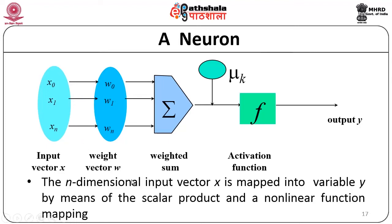The input to the neuron is going to be an n-dimensional vector. Any dataset you want to provide as input to a neural network must be converted into an n-dimensional vector. This n-dimensional input vector can be mapped to variable y — the output — using a non-linear function that maps inputs to the corresponding output.